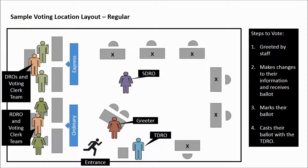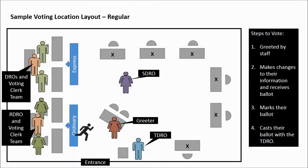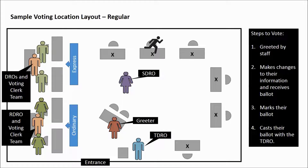In the other scenario, the elector only has identification. The greeter directs them to the regular poll, where the Revision Deputy Returning Officer will verify if they're on the list, make any necessary changes, and give them a ballot. The elector then marks their ballot and gives it to the Tabulator Deputy Returning Officer before leaving the voting location.